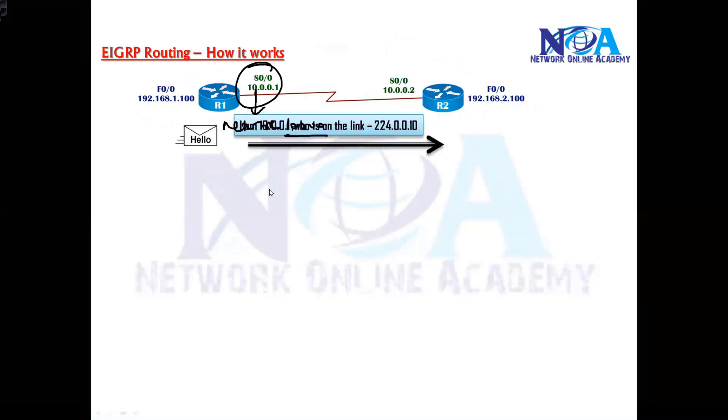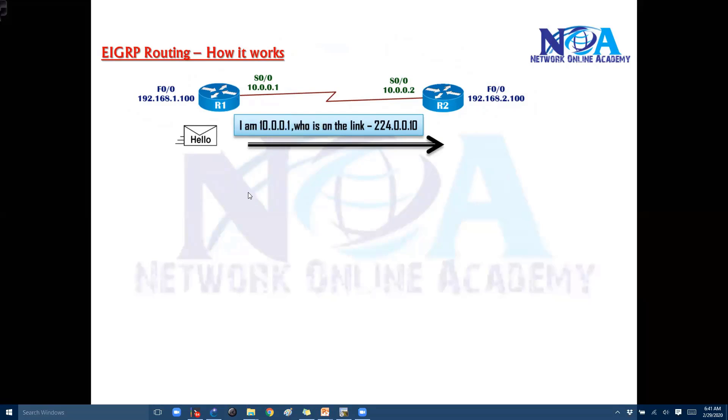Router 1 is going to initiate a hello message saying that I am so-and-so, I am 10.0.0.1, and it is going to send out a hello message on 224.0.0.10. That is a multicast address reserved for EIGRP, just like we have 224.0.0.5 and 6 reserved for OSPF and 9 is reserved for RIP version 2 updates. So for the initial neighbor discovery it is going to send out a hello message.